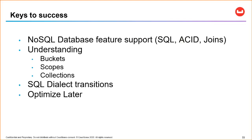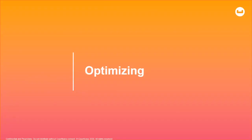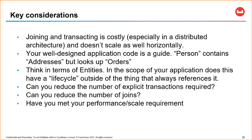To sum up: these are the keys to success when moving from relational to NoSQL. Does your NoSQL database have the features you need — SQL, transactions, joins? Do you understand the mapping between tables and collections, schemas and scopes, databases and buckets, and the SQL dialect transitions? Then optimize later — once everything is moved over and your queries are working, then it's time to think about optimizing.